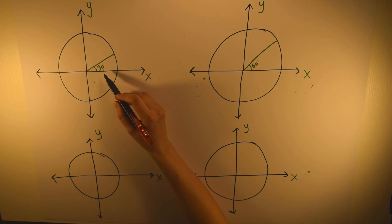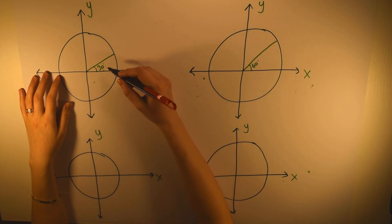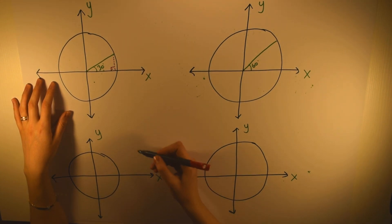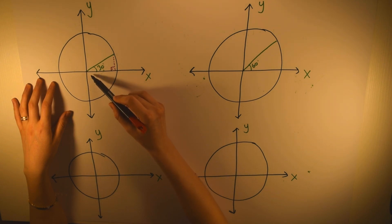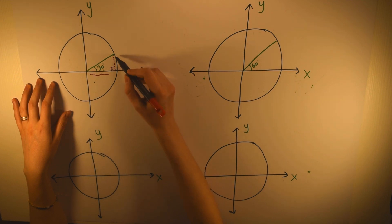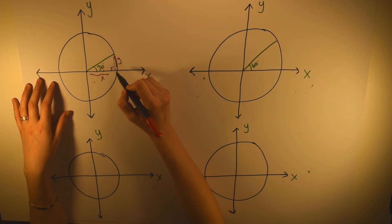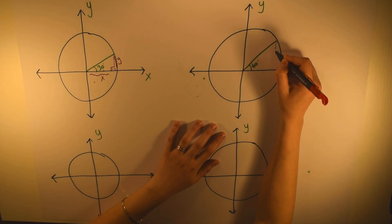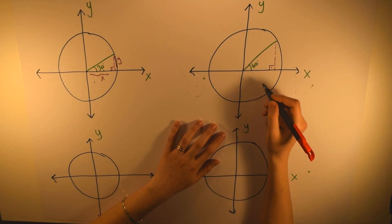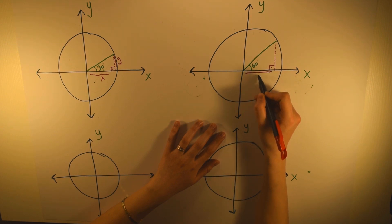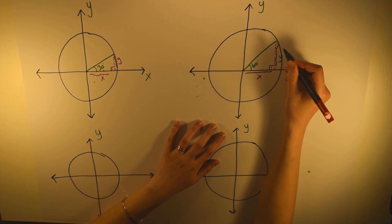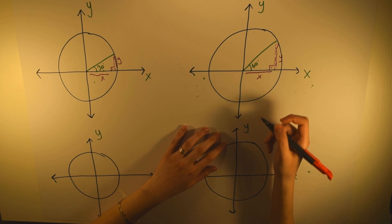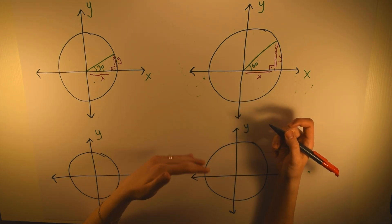Starting with a 30-degree angle: drawing a right triangle from the point to the x-axis, the length of x is larger than y. When we look at 60 degrees and draw the right triangle, the length of x is shorter — the length of y is actually larger than x. So depending on the angle, the lengths of x and y are changing.